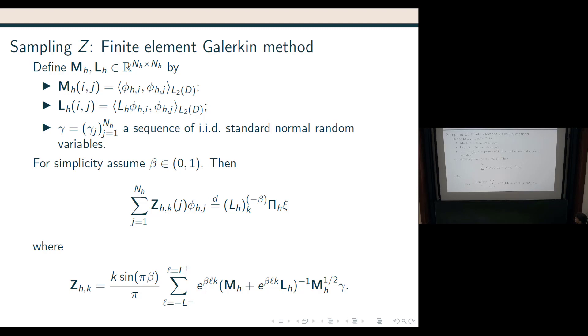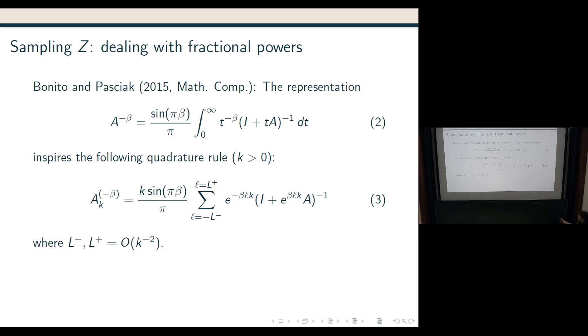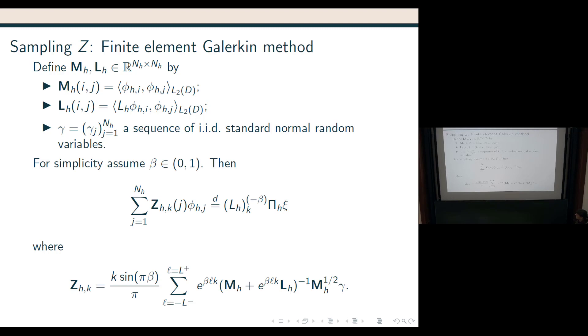And so, and gamma is just an IID random vector. So we sample an IID random vector. We apply the square root of this matrix, we then calculate all of these inverses, sum them, and we get the coefficients of our approximation of the Gaussian random field. This is by using this quadrature. So, this sum here is just the quadrature rule translated to the coefficient space.